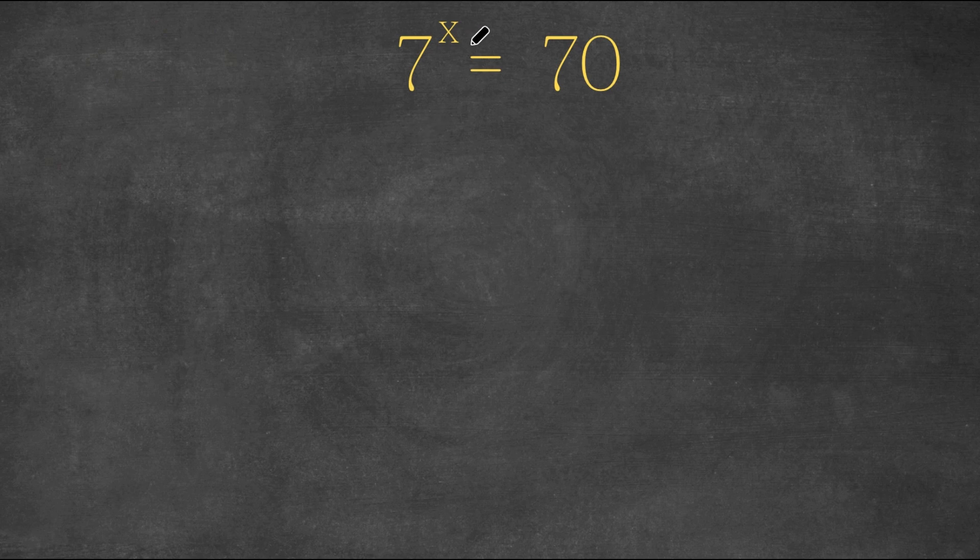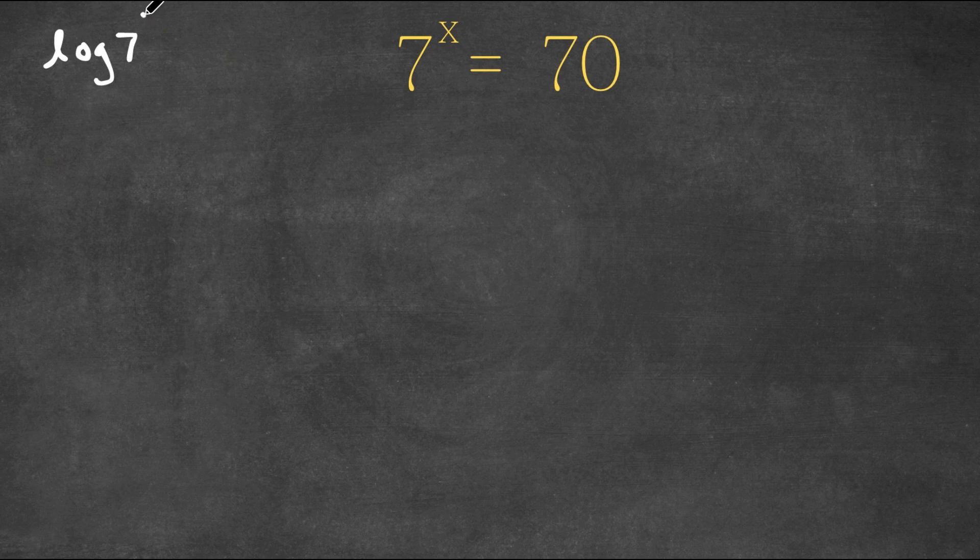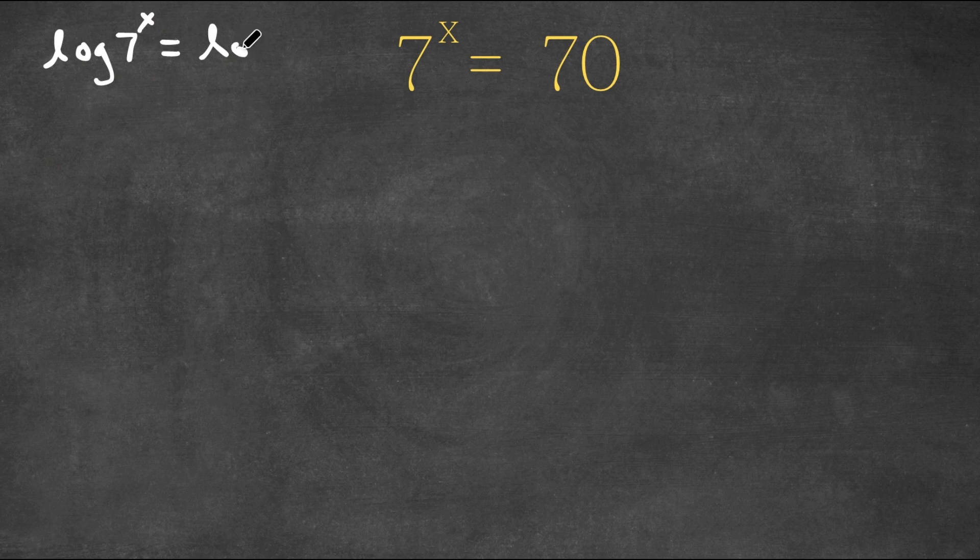So we have 7 to the power of x is equal to 70. Now what I'm first going to do is take the log on both sides. So now we have log 7 to the power of x is equal to log 70.